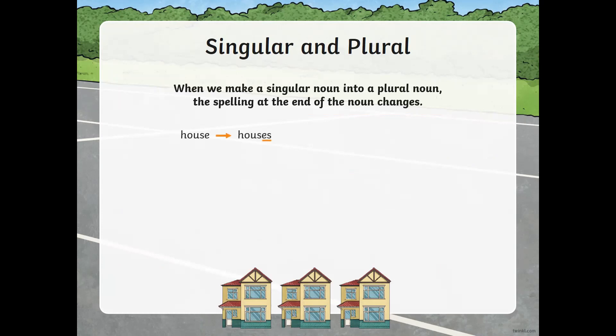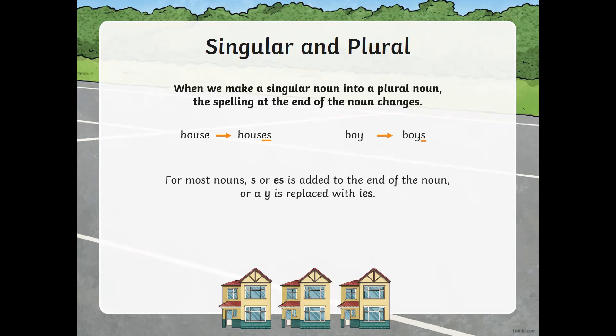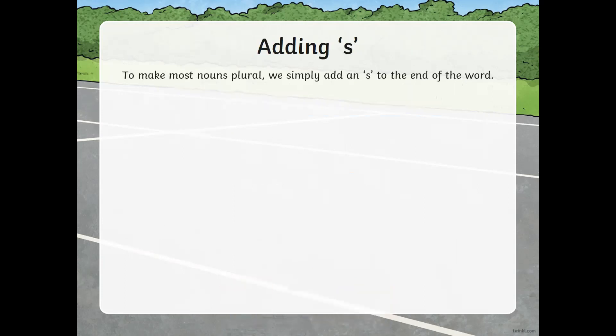For example, 'house' will become 'houses.' Look carefully at the change. For most nouns, an S or ES is added at the end of the noun, or a Y is replaced with I-E-S. This is a rule I need you to memorize, grade one — when we change a singular noun to a plural noun, the spelling will change.